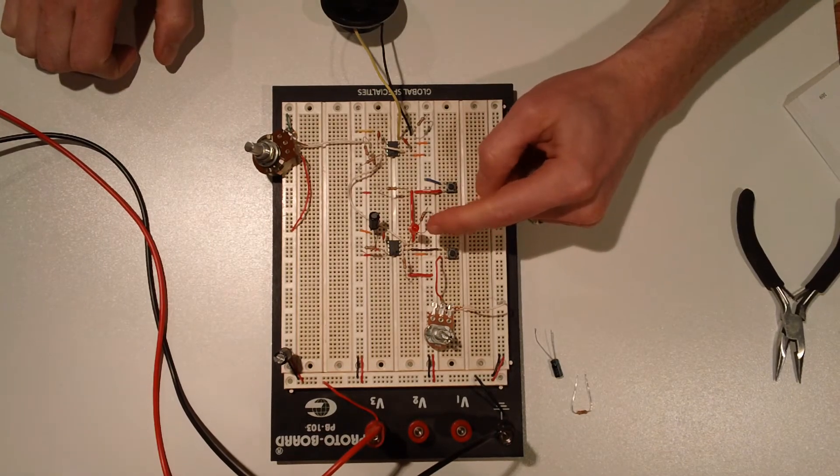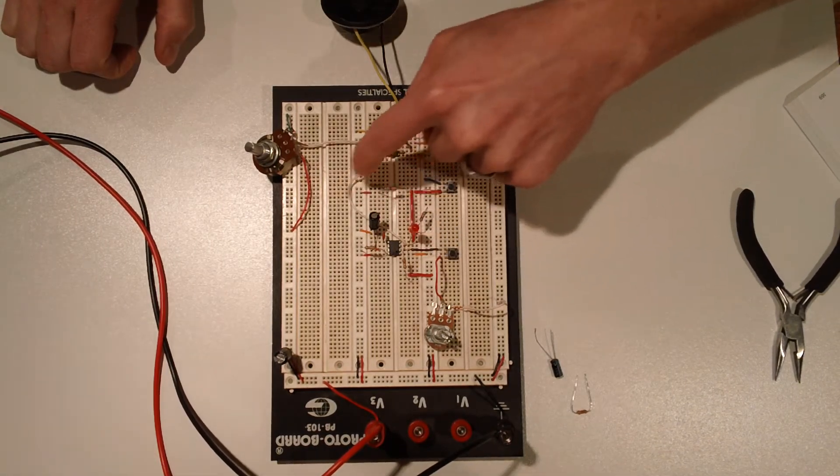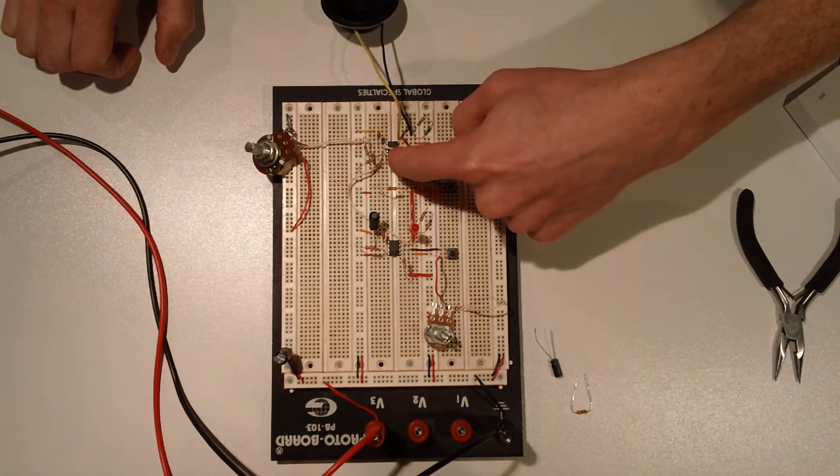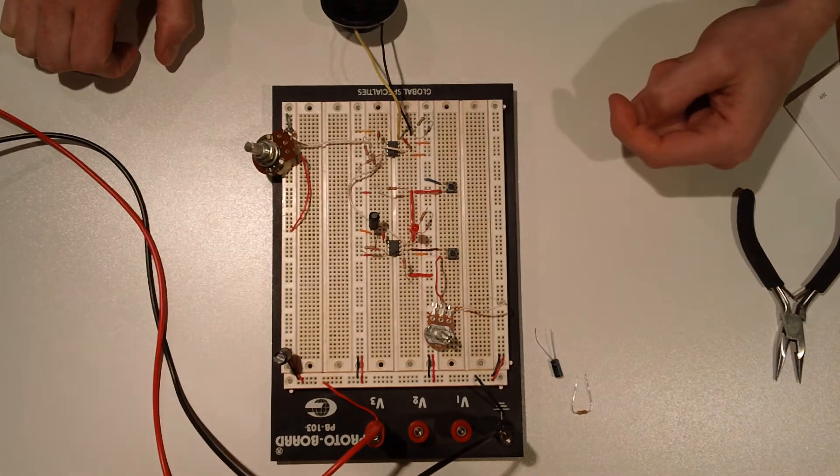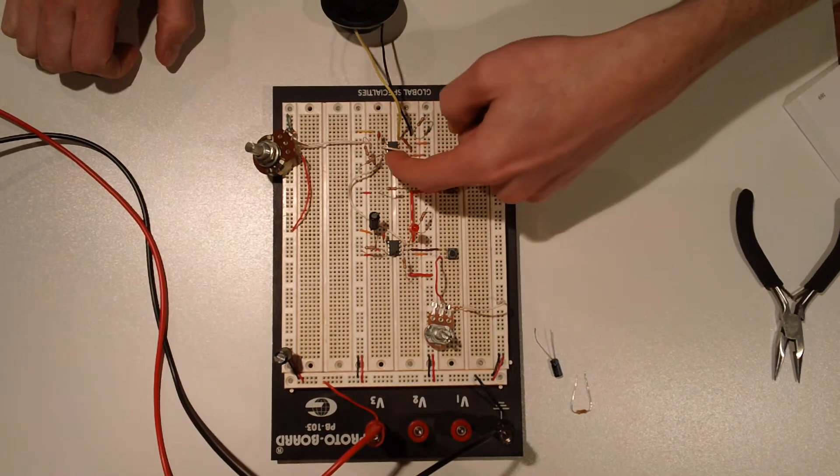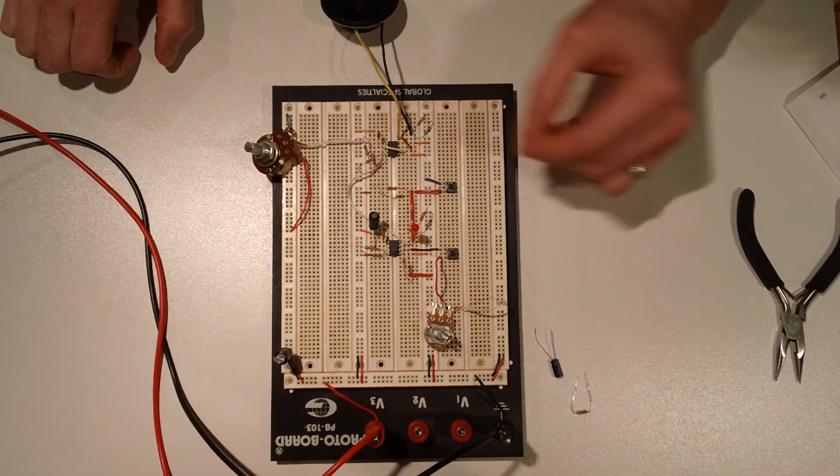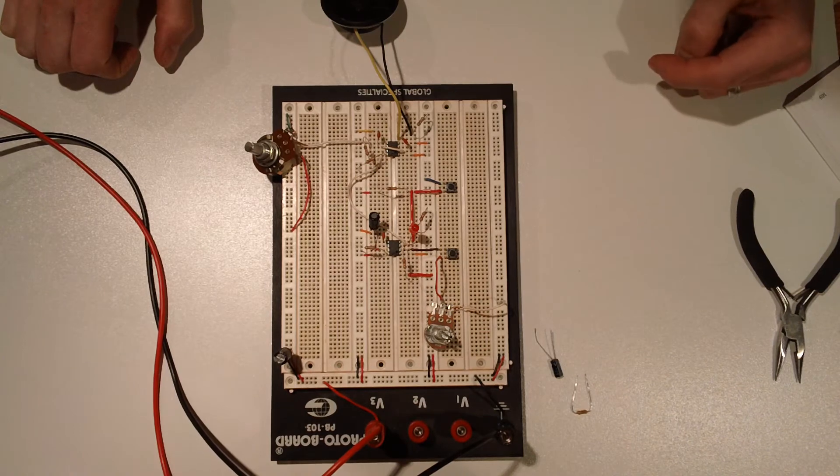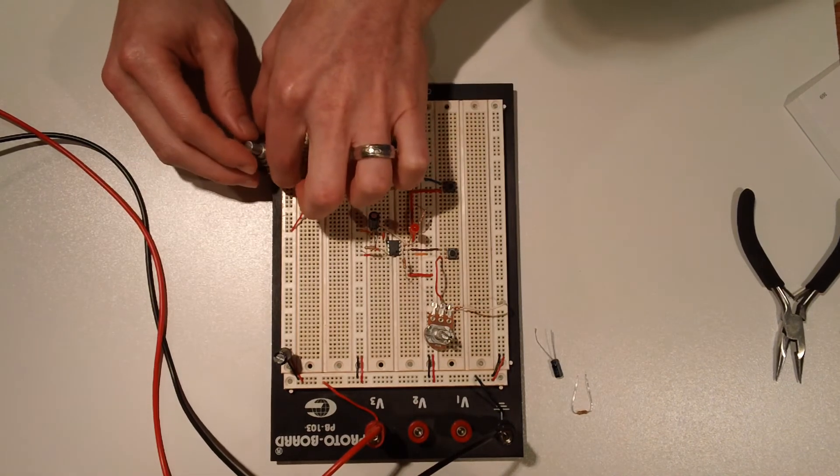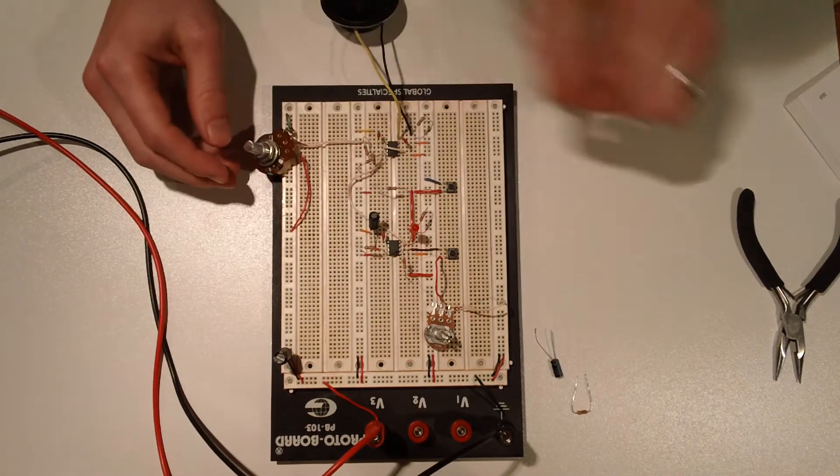So when this light lights up, the output also runs through that white line to the positive supply of our VCC or our 555 right here, which then actually turns on the speaker, and we can control the pitch with this potentiometer.